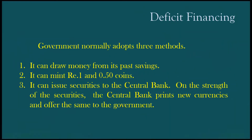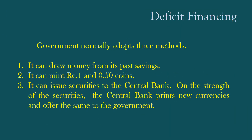The government normally adopts three methods. 1. It can draw money from its past savings. 2. It can mint one rupee and fifty paise coins. 3. It can issue securities to the central bank. On the strength of those securities, the central bank prints new currencies and offers them to the government.